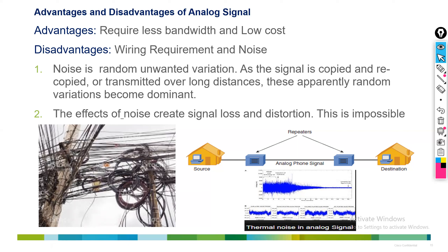When the disturbance reaches the destination, along with your voice there is also disturbance. So there is no voice quality in the analog signal. One connection allows only one call, and there is a lot of noise. This is about the disadvantages of analog signal.